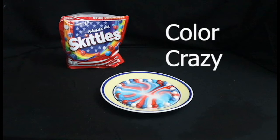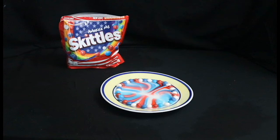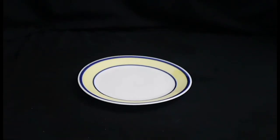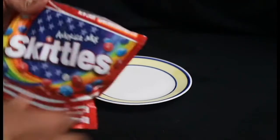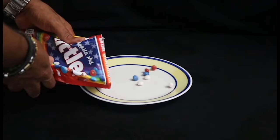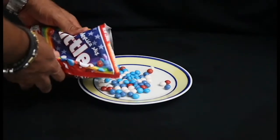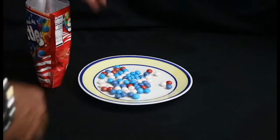For the activity, color crazy, we can do this several different ways. We're going to use a bag of Skittles, a regular dish or plate, and some water. First, we're going to pour the Skittles into our plate and make any type of pattern that we design. Today, we're just going to use a circular pattern.